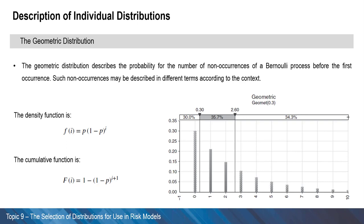The distribution has a single parameter p, the probability of occurrence at each period. The figure shows the distribution for p equal to 30%. The equations for the density and cumulative functions of this distribution are shown here.